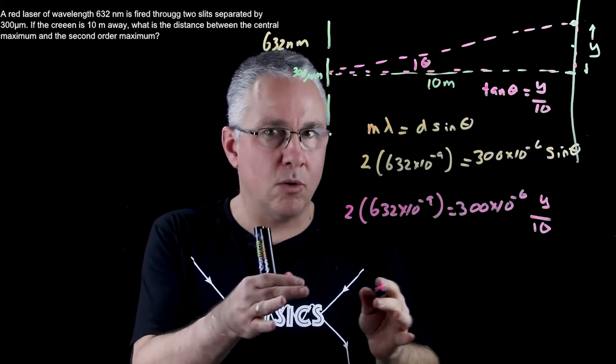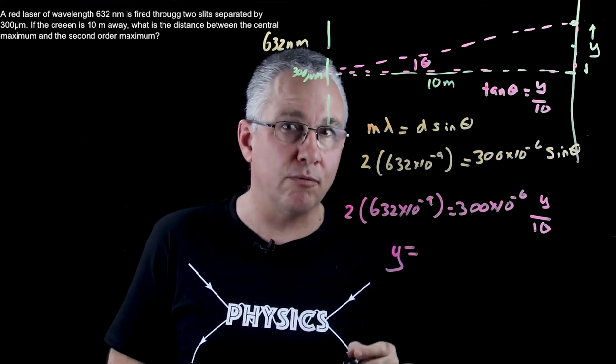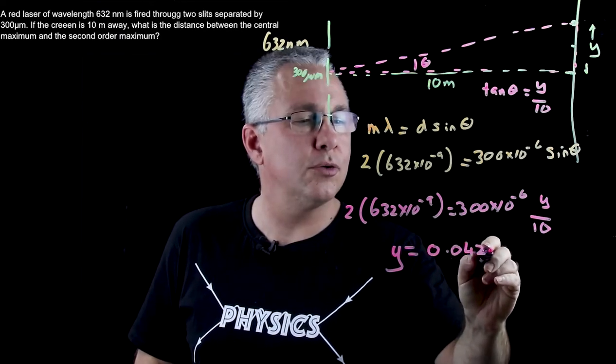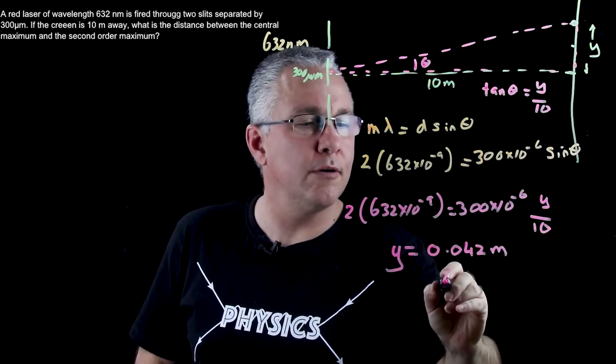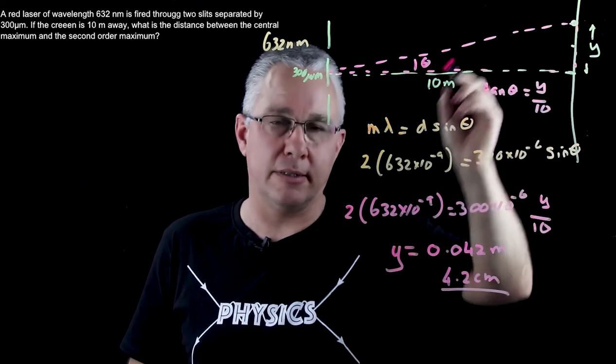You can see now all we need to do is rearrange this. So if you calculate that out you're going to get a value of y of 0.042 meters or 4.2 centimeters. So that is the distance from there to there.